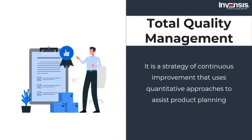Next is total quality management, which is a strategy of continuous improvement that uses quantitative approaches. To assist product planning and performance assessments, total quality management depends on facts, data, and analysis. The quality of a product is determined by the quality of the elements that make it up, some of which are sustainable and well-controlled, while others are not. Total quality management is addressed by the processes handled using quality assurance. The product's quality cannot be guaranteed if the specification does not represent the genuine quality requirements — for example, the operating environment, safety, reliability, and maintainability specifications.